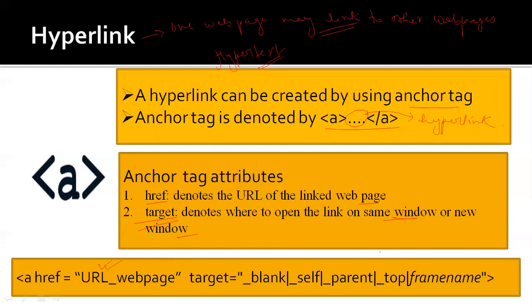The target attribute may have the following options: underscore blank means the web page will open in a new window; underscore self means the hyperlink will open in the same frame; underscore parent means it will open in the parent frame; underscore top means it will open in the full body of the window. You can also give a specific frame name.